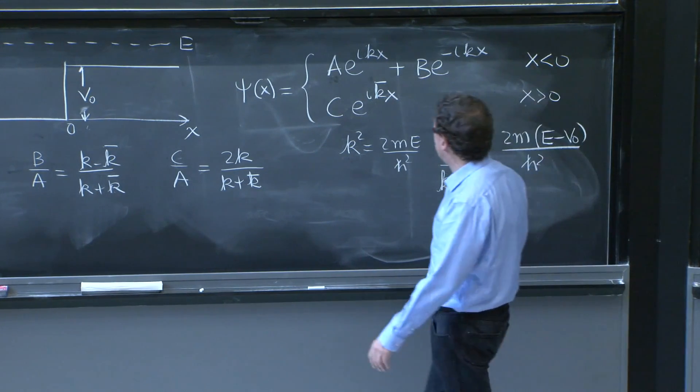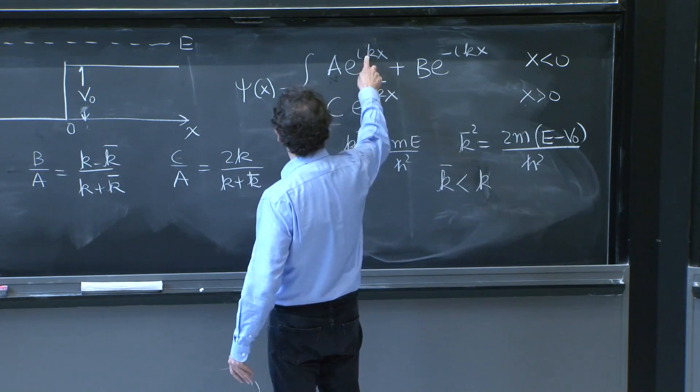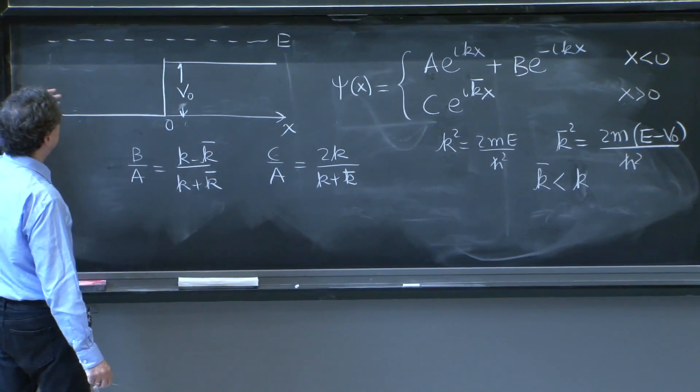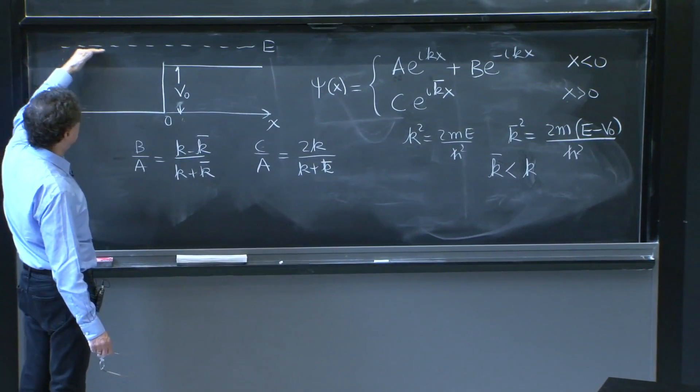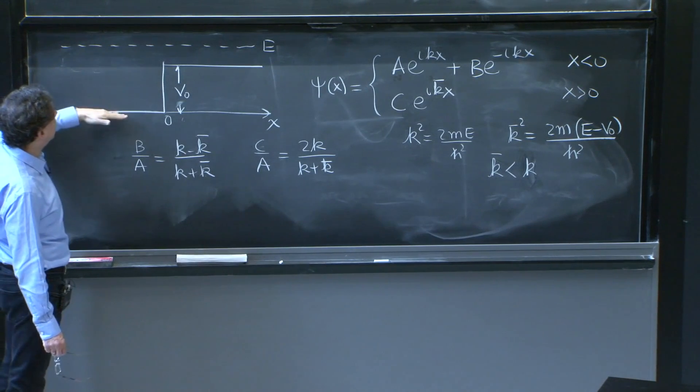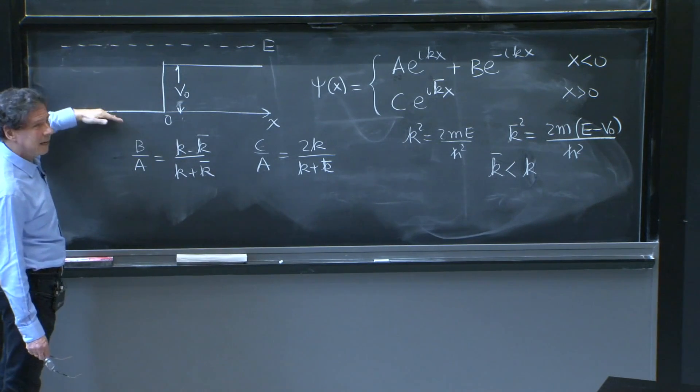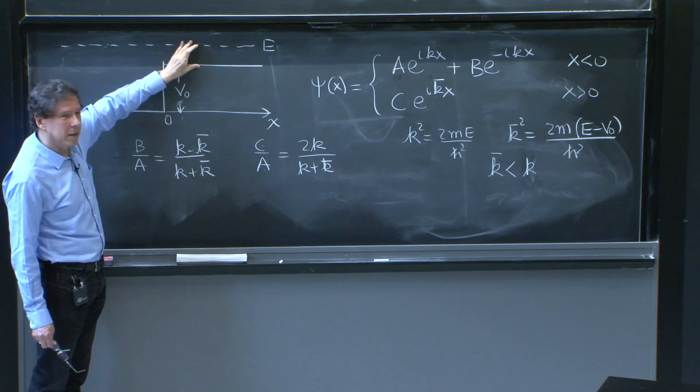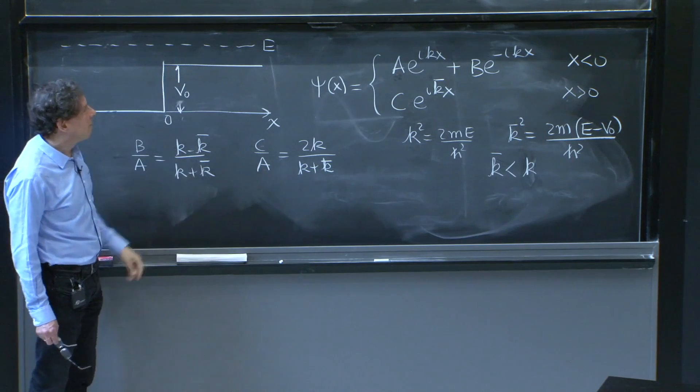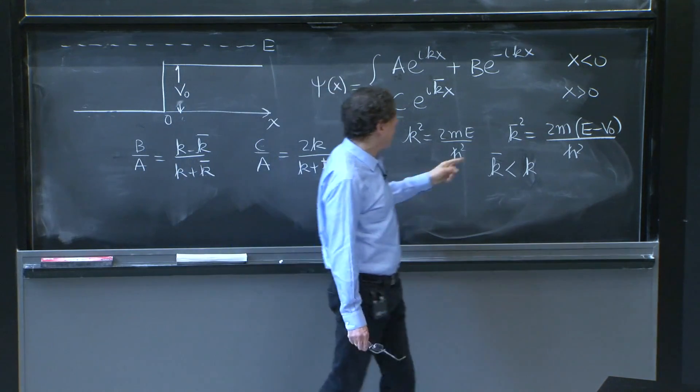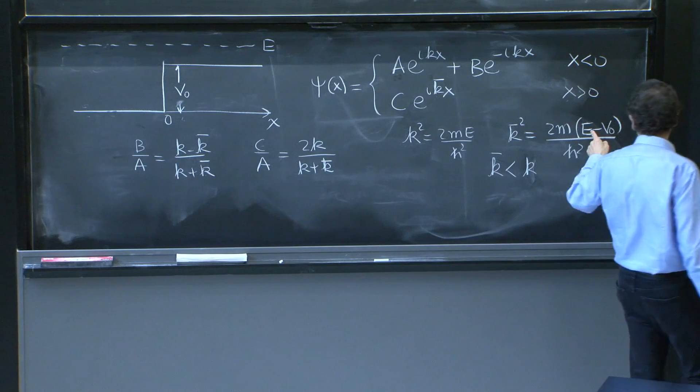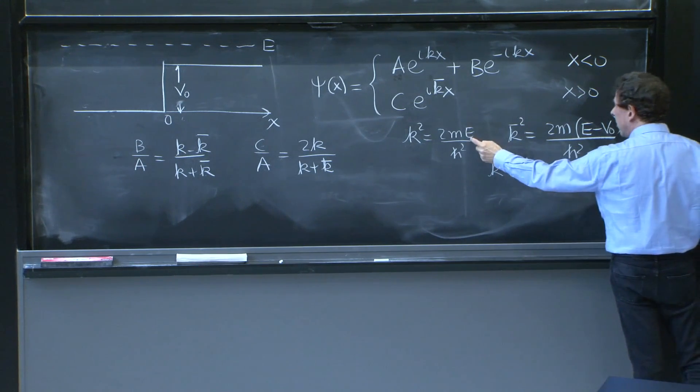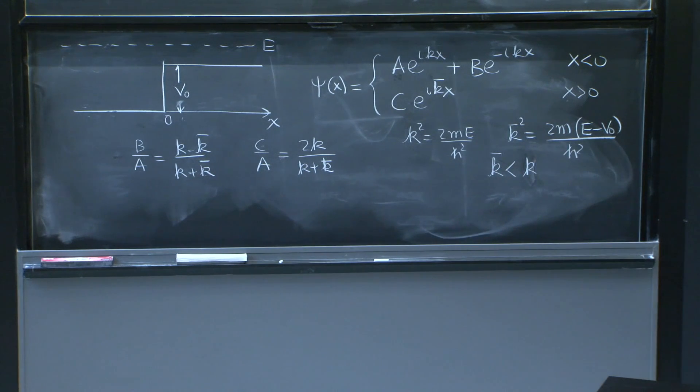They have to be different, because this represents the de Broglie wavelength. And the de Broglie wavelength encodes the momentum of the particle. And the momentum of the particle that we imagine here classically is different here, where this has this much kinetic energy, and in the region on the right, where the particle only has a much smaller kinetic energy. So that's represented by k̄. And k̄ being the energy proportional to the energy minus V₀, while k² has just the energy, is smaller than k.